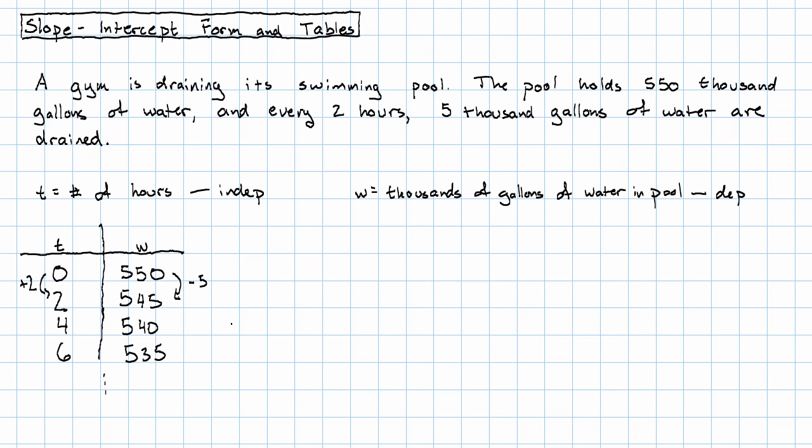And so we get the equation w equals change in w over change in t, plus the value of w when t is 0. And as we saw, this is in the slope-intercept form.